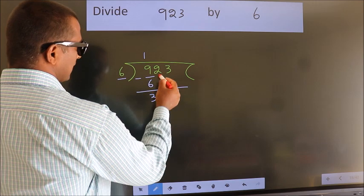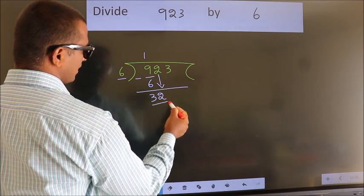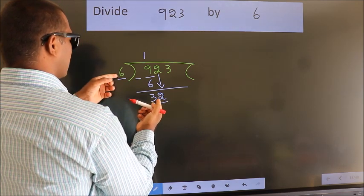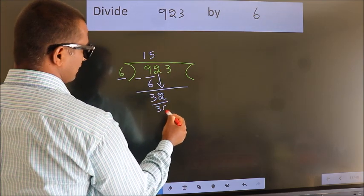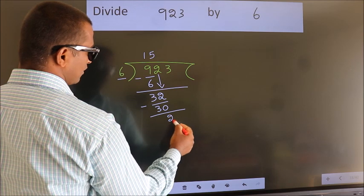After this, bring down the beside number. So, 2 down. So, 32. A number close to 32 in the 6 table is 6 times 5 is 30. Now we subtract. We get 2.